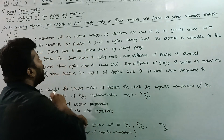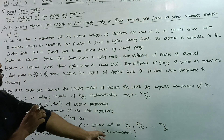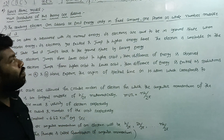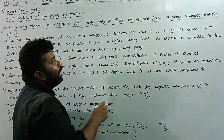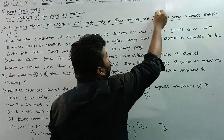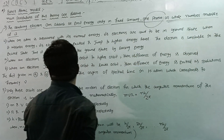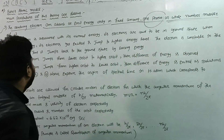The revolving electron can absorb or emit energy only in a fixed amount — one photon or a whole number multiple of it.